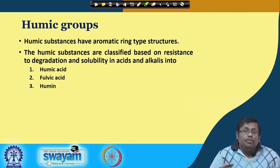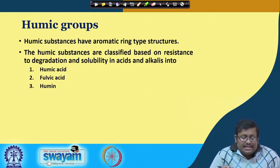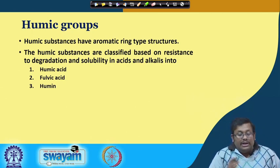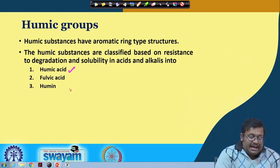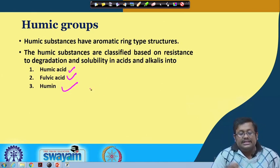Humic substances have an aromatic type of structure. When we break down humus we get basically three types of humic substances: humic acid, fulvic acid, and humine. These substances are classified based on their resistance to degradation and solubility in acids and alkali.